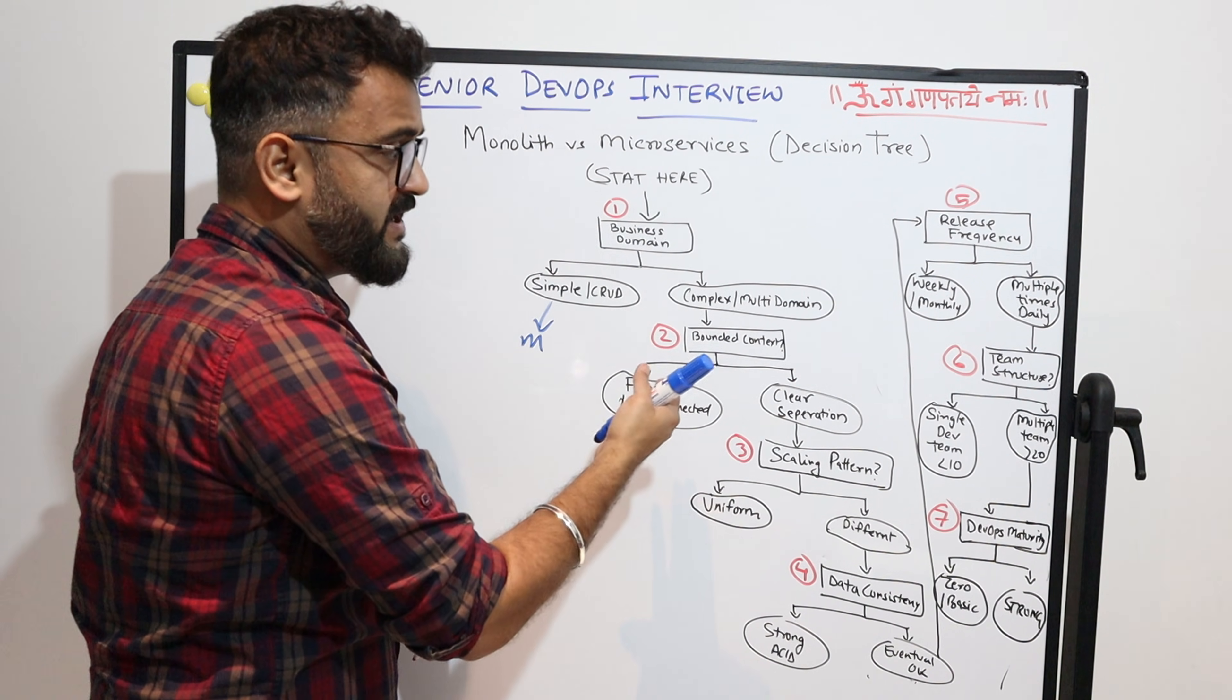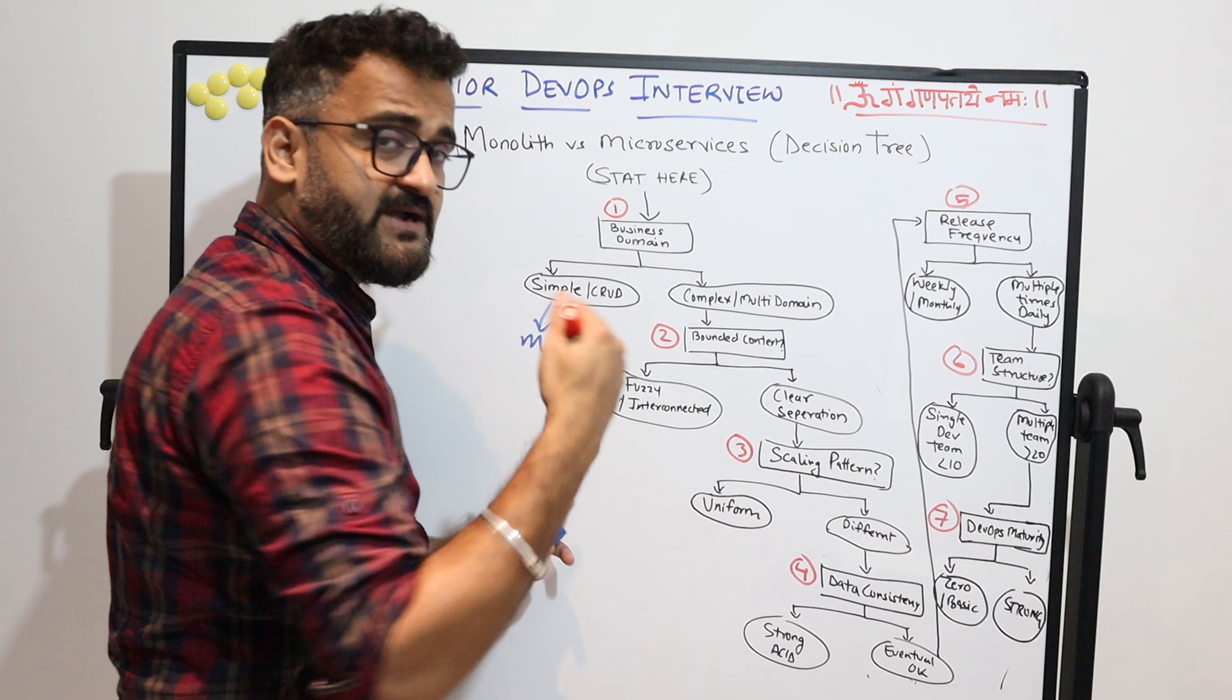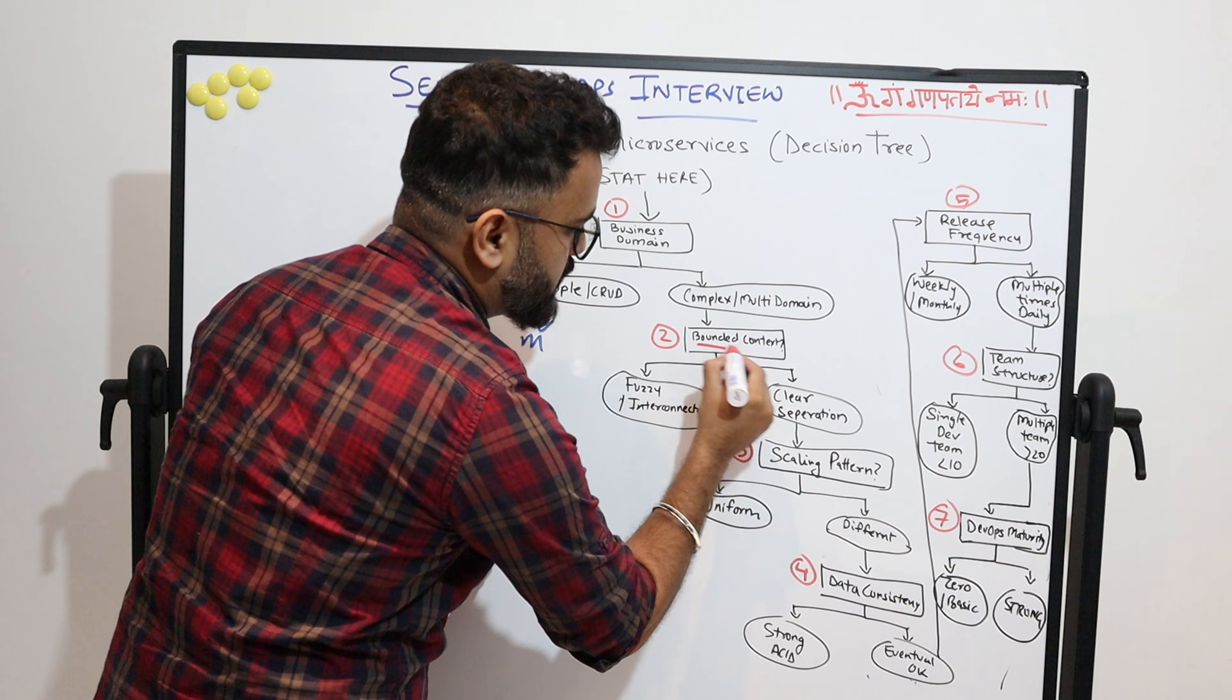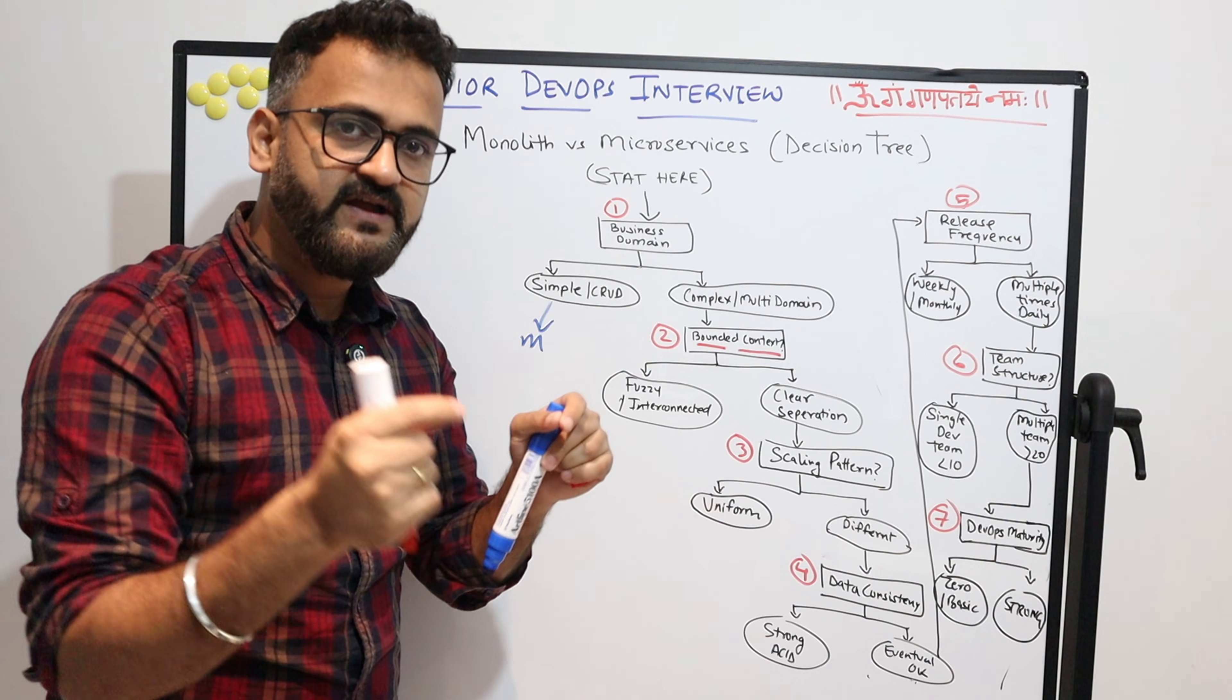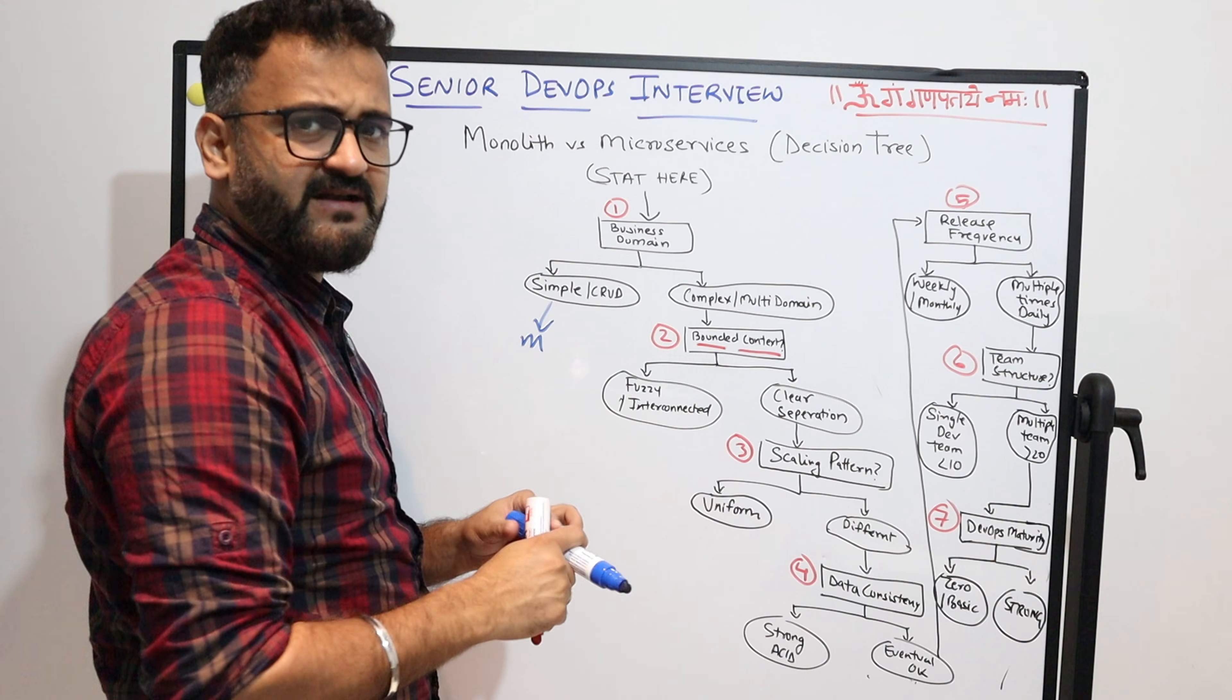But if it is a complex multi-domain, then you have to ask a follow-up question. What is the follow-up question? If it is a multi-domain application with complex business context, then are the contexts bounded? What does that mean? Is the boundary of that business context clearly defined or not?